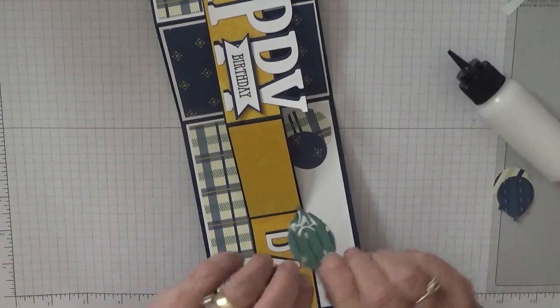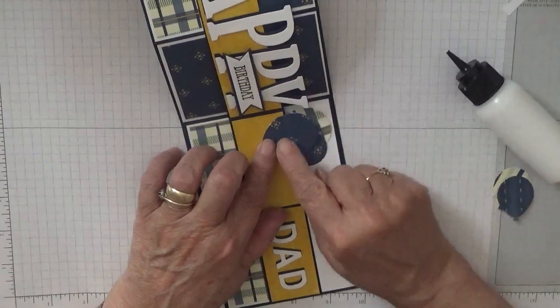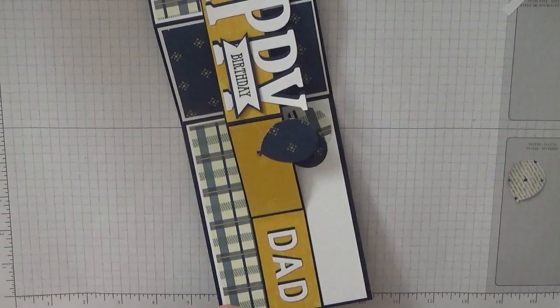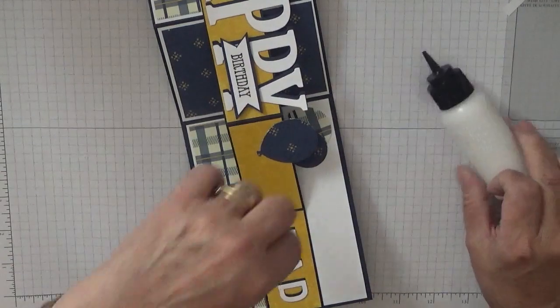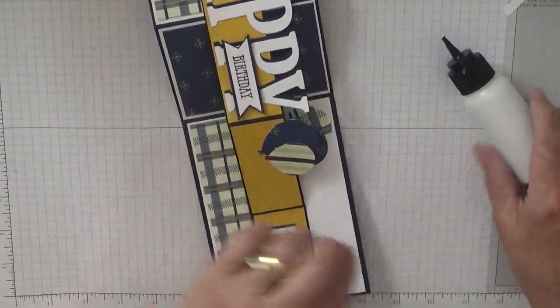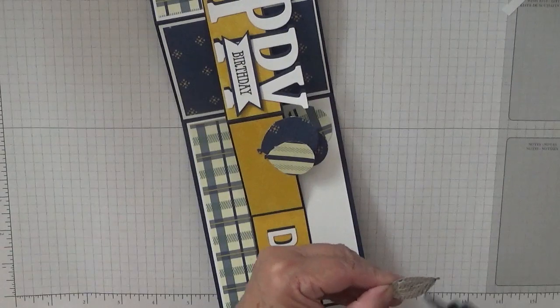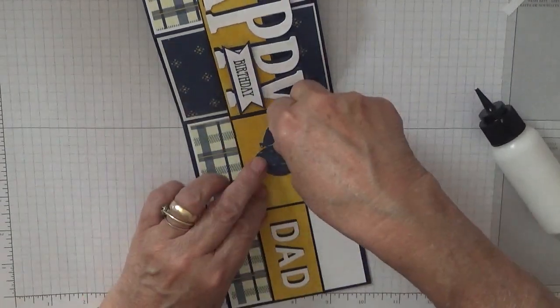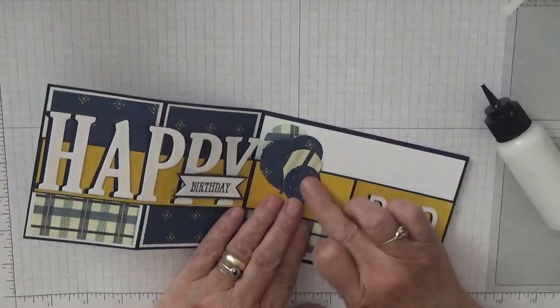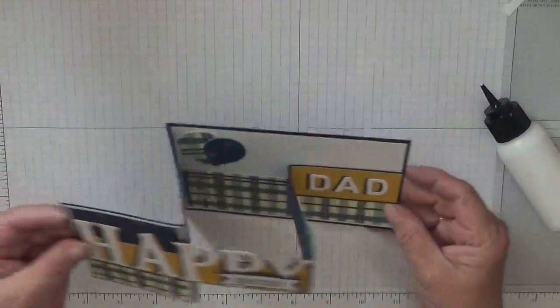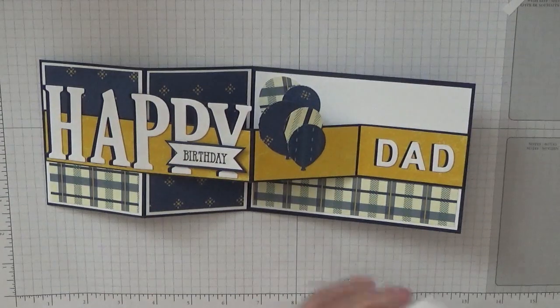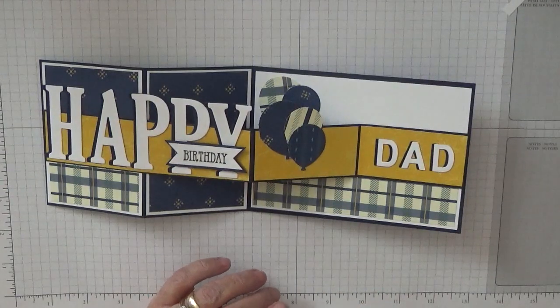And then we'll put these on. The big one I'm only gluing the bottom because I don't want it sticking to the piece of paper down there. And there we have our birthday card for Dad.